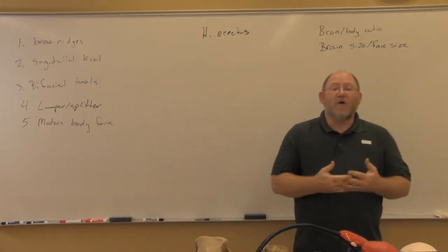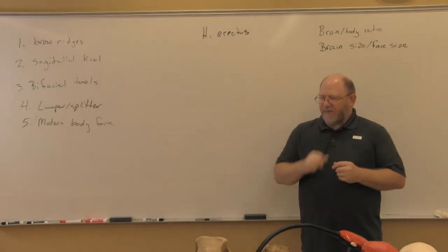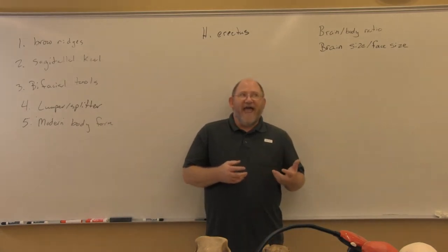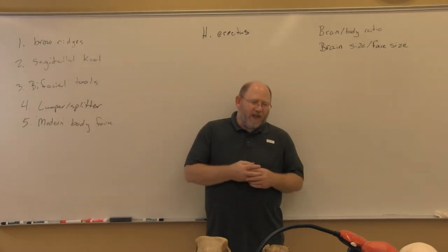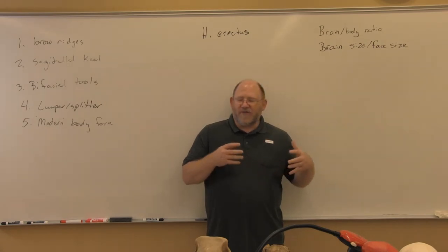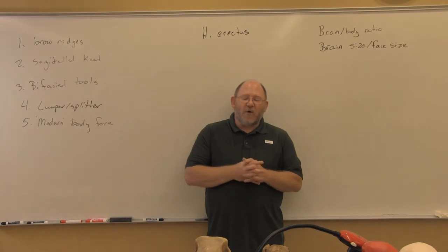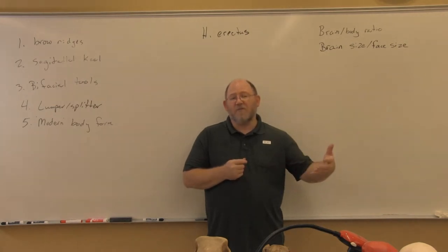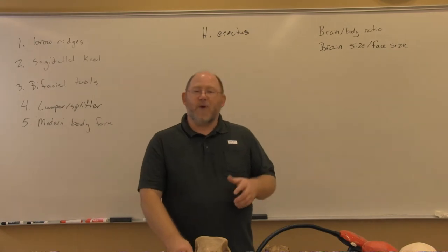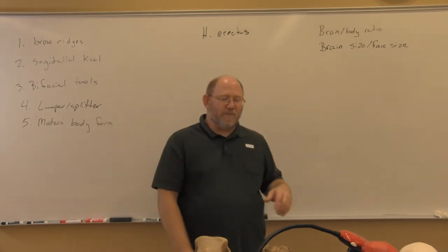We're going to talk about Homo erectus, the next in our genus line. Homo erectus first appeared on the scene somewhere around 1.8 million years ago. When they ended is a source of some debate — the question has to do with the transition from Homo erectus into archaic Homo sapiens. Homo erectus may go up to maybe 200,000 years ago, or maybe even 800,000 years ago. Regardless, it is our longest-lived ancestor for at minimum 1 million years.